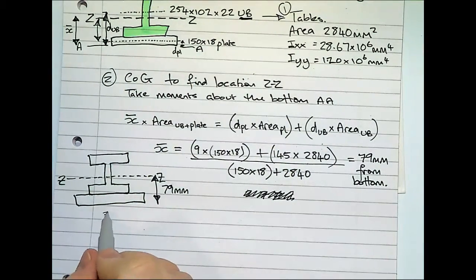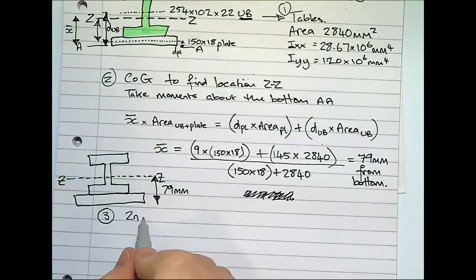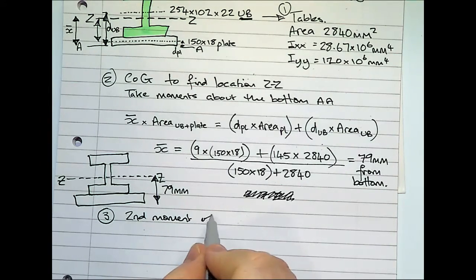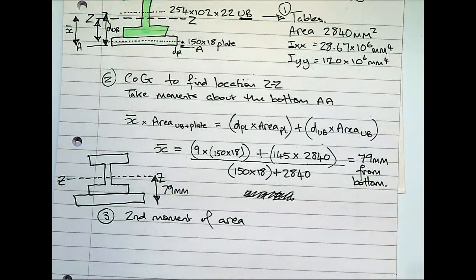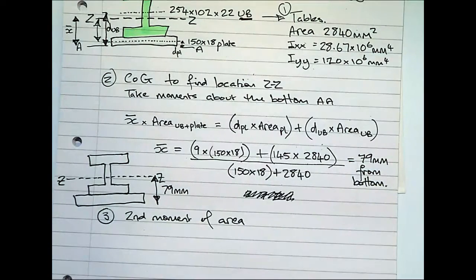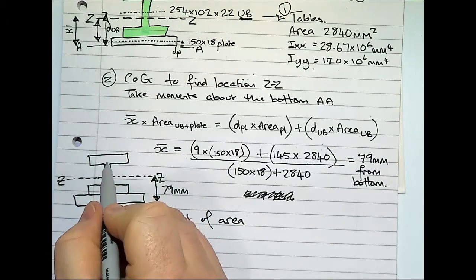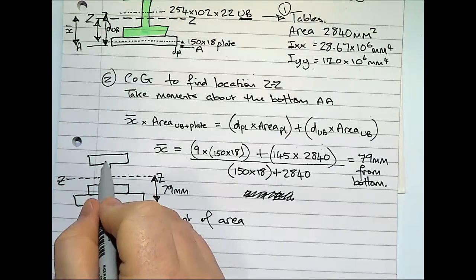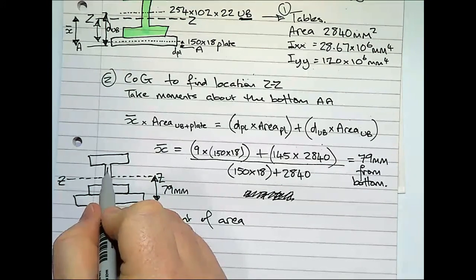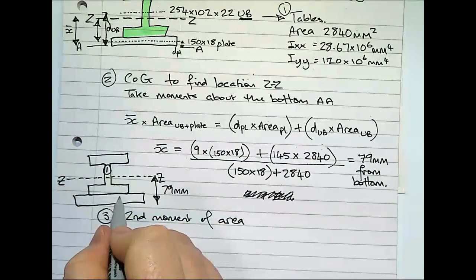Right, so now we'll do the second moment of area. So let's get back to today's topic. Now that we know the position of the centre of gravity for the compound beam. And if we call the universal beam shape 1, and if we call the plate shape 2.